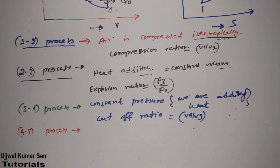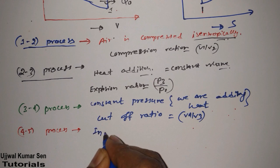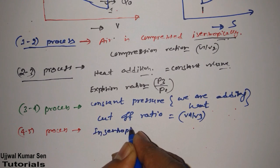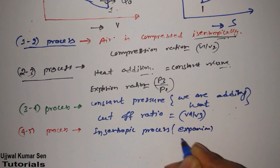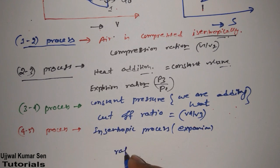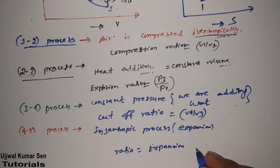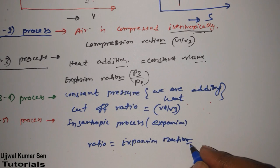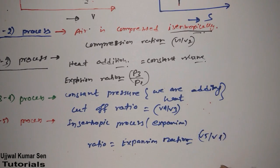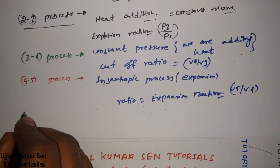For process 4→5: this is also an isentropic process — isentropic expansion is taking place. The expansion ratio is equal to V5 divided by V4.